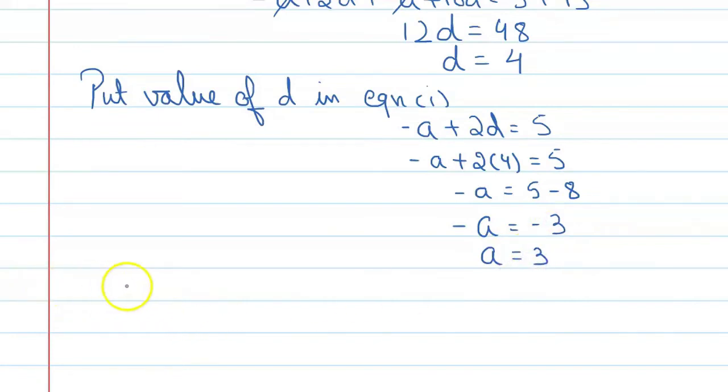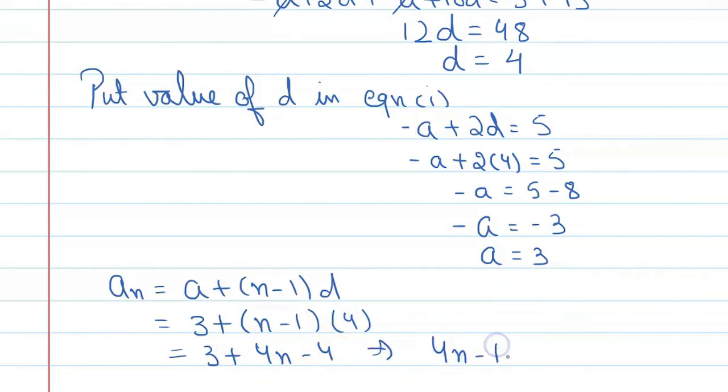Now we need to find nth term. To find the nth term, we will put the value of A and D in this formula. We can say AN is equal to A plus N minus 1 into D. A is 3 plus N minus 1, D is equal to 4. From here we will get 3 plus 4N minus 4, and here we will get 4N minus 1.